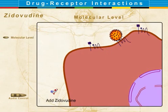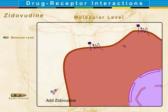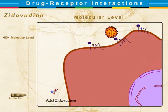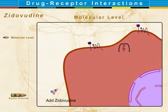The viral particle of HIV approaches the T cell and connects to special T cell surface CD4 receptors. The viral surface GP120 protein spreads over the infected T cell surface.